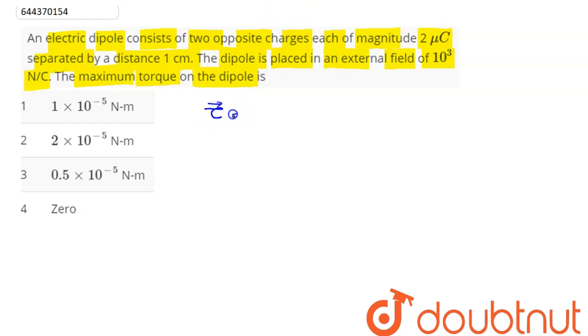So we can say here torque acting on a dipole placed in a uniform electric field region is given by the formula p cross E. So we have the magnitude of the torque given here as p into E into sine theta.